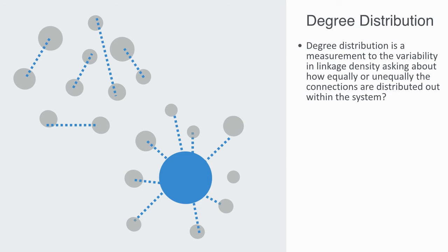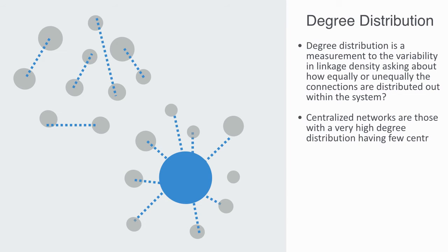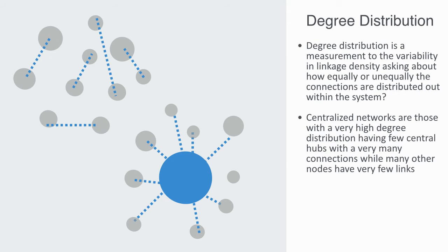Centralized networks are those with a very high degree distribution, having few central hubs with very many connections while many other nodes have very few links. This may also give rise to what is called a scale-free network, which are surprisingly common in our world.